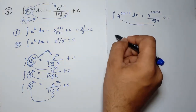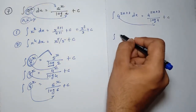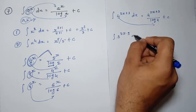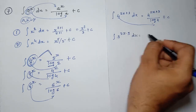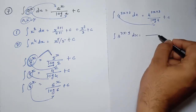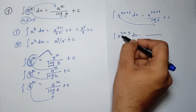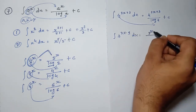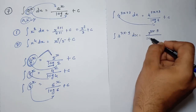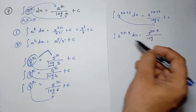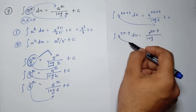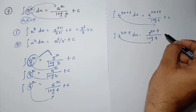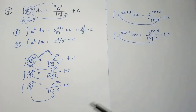Take one more: 3 raised to 2x minus 9. What to do here? First, 3 raised to 2x minus 9 as it is, divide by log 3, plus c.